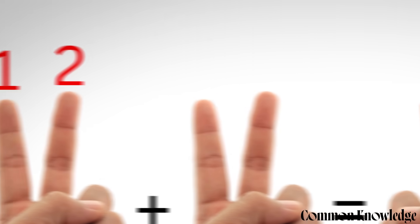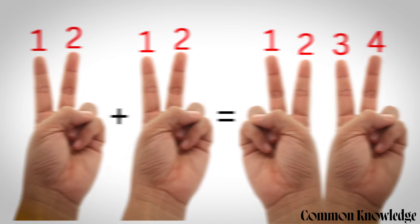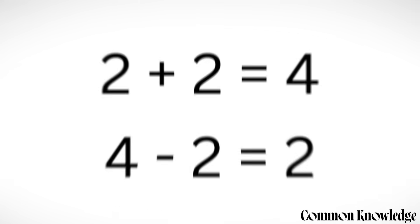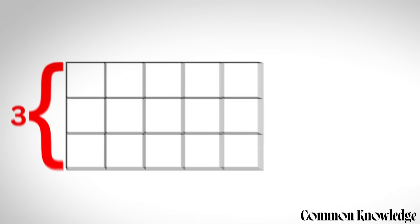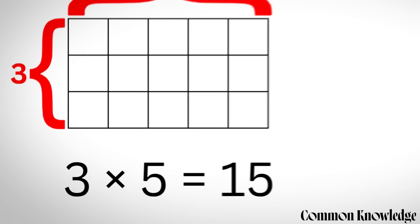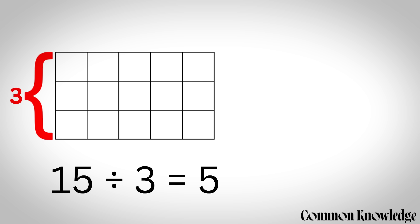The four operations: 1 plus 2 equals 3, and in reverse 4 minus 2 equals 2. Three rows times five columns makes 15 cells, and if you've got 15 cells and three rows then you must have five columns.